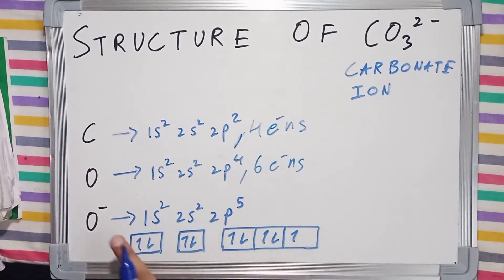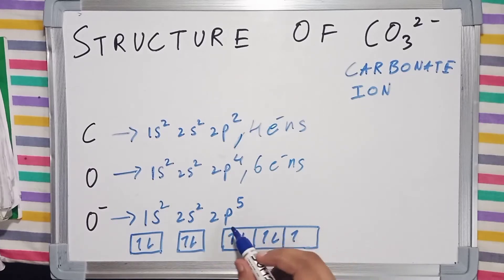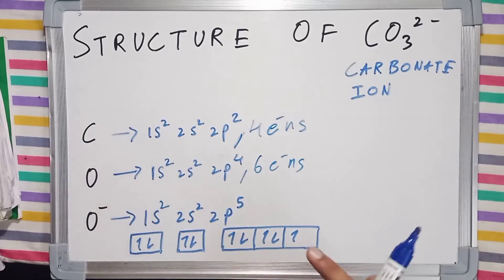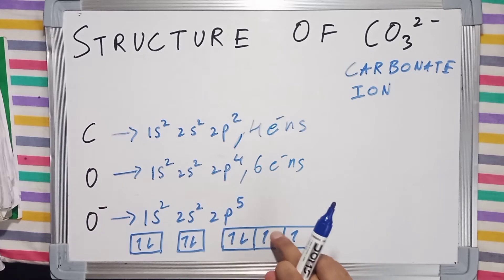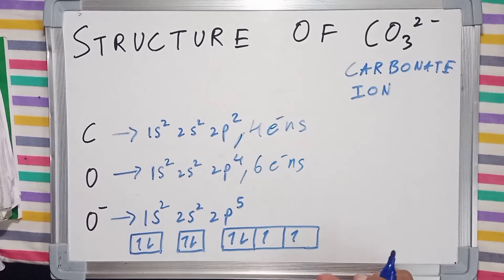Notice the oxide ion just needs a single electron to complete its valence shell and attain the configuration 1s² 2s² 2p⁶. Whereas oxygen has just 4 electrons in the 2p subshell and requires 2 electrons to complete its octet.